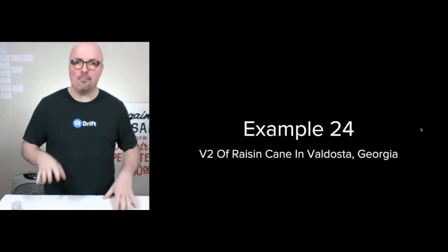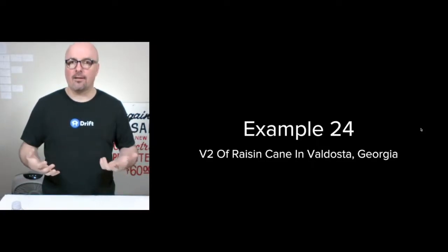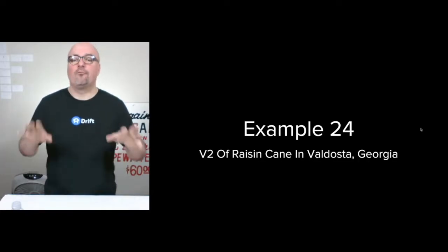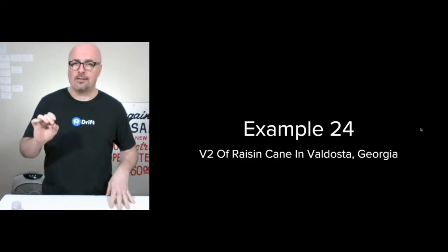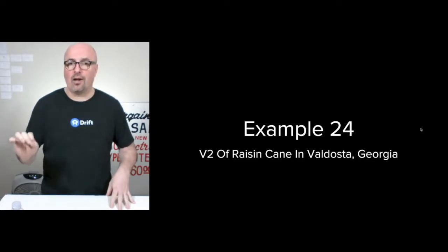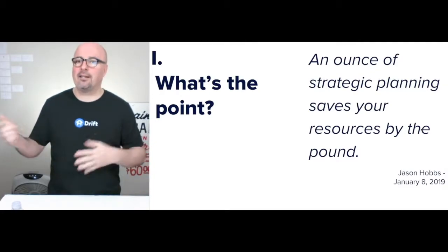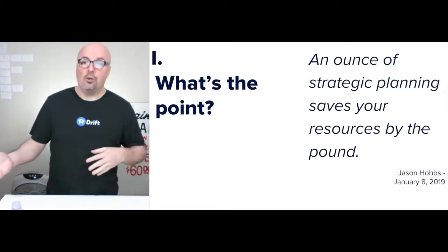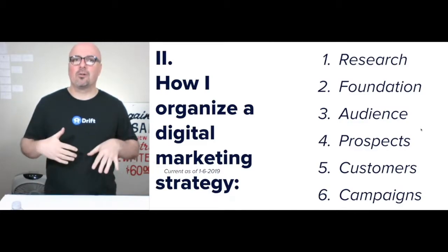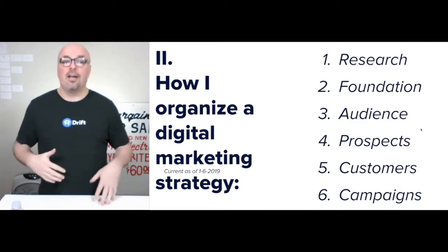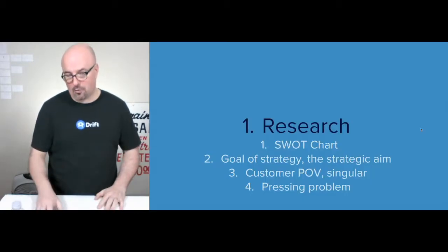Hi, I'm Jason Hobbs. This is example 24 of how I organize a digital marketing strategy, version two this time of Raisin Cane, which is an on-the-farm market in Valdosta, Georgia. So what's the point? Analysis, strategic planning — the way that I organize a digital marketing strategy has evolved to these six steps, which we're going to walk through.